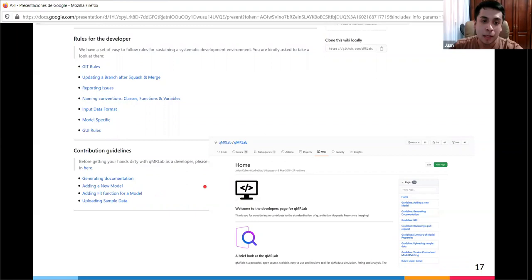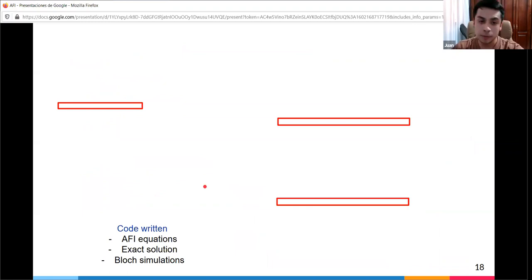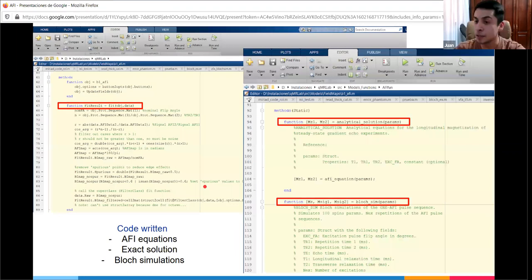Once he read the instructions, it was time to get his hands dirty. They defined the method, properties, and functions. The code they wrote was the code regarding the fit function. They fit the data, wrote the AFI equations, and wrote the functions for the analytical solution and for the block simulation.